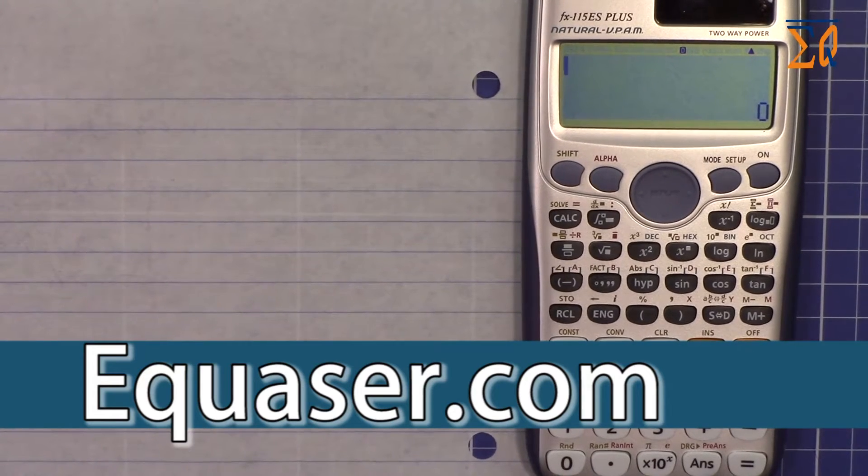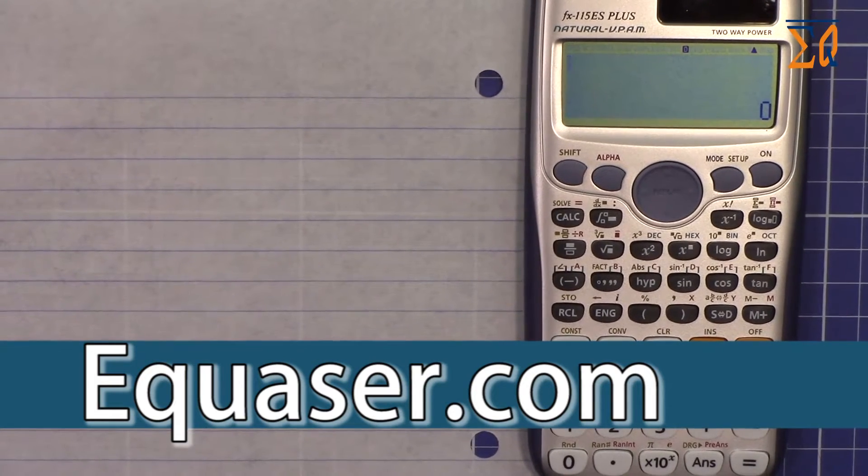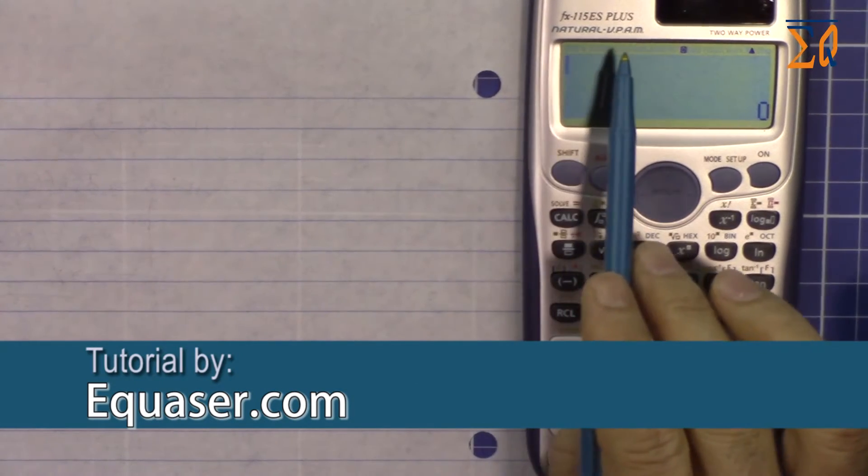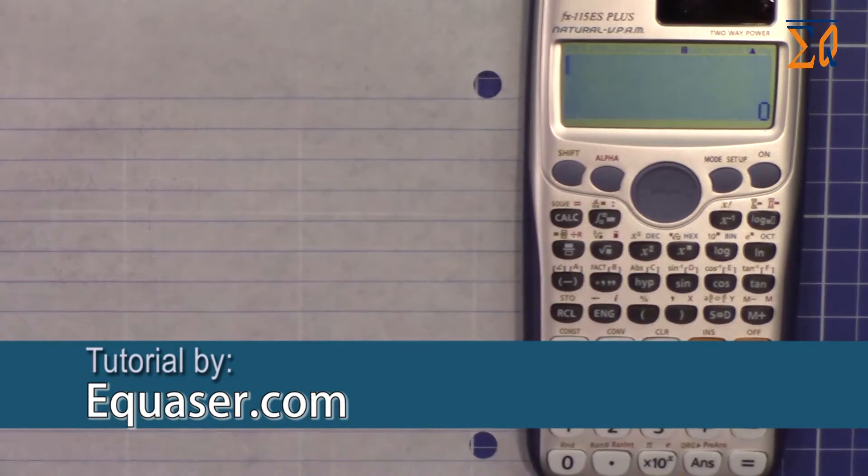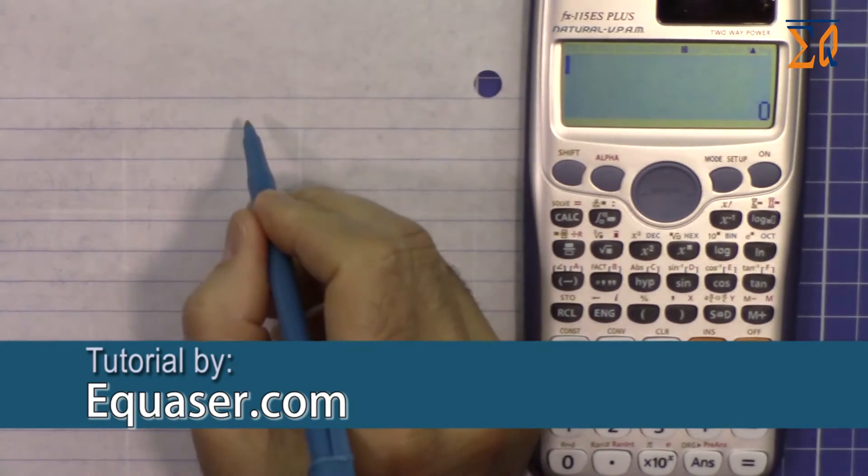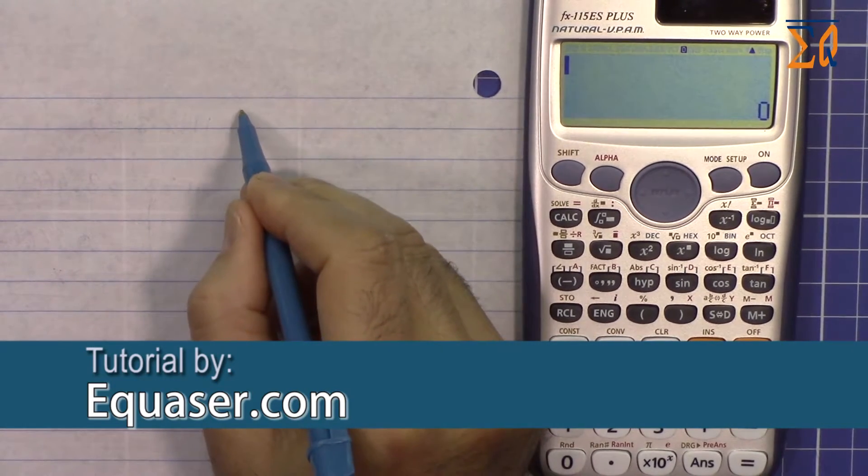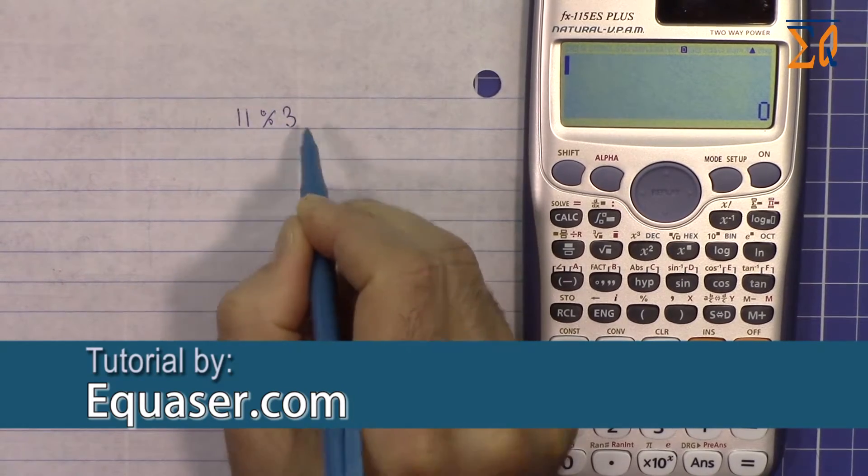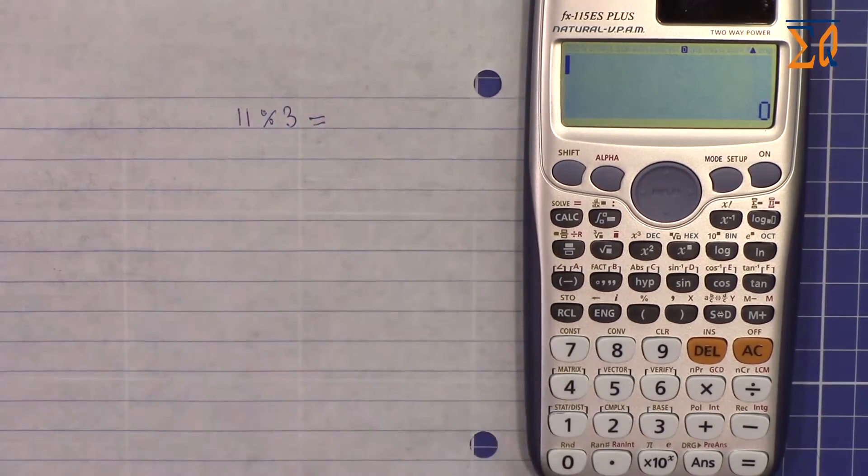Hello everyone, welcome to another video from Equaser.com. In this video we are going to use the Casio FX-115 ES Plus to find the modulus. So you will have a question something like 11 modulus 3.